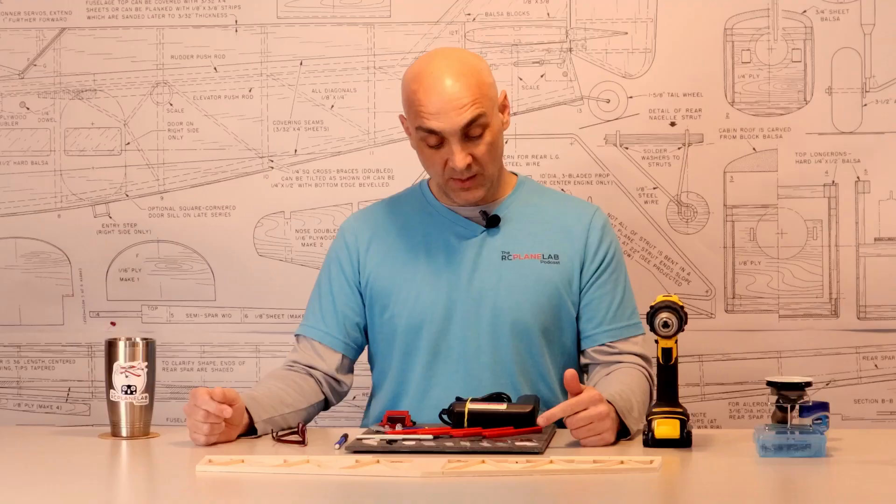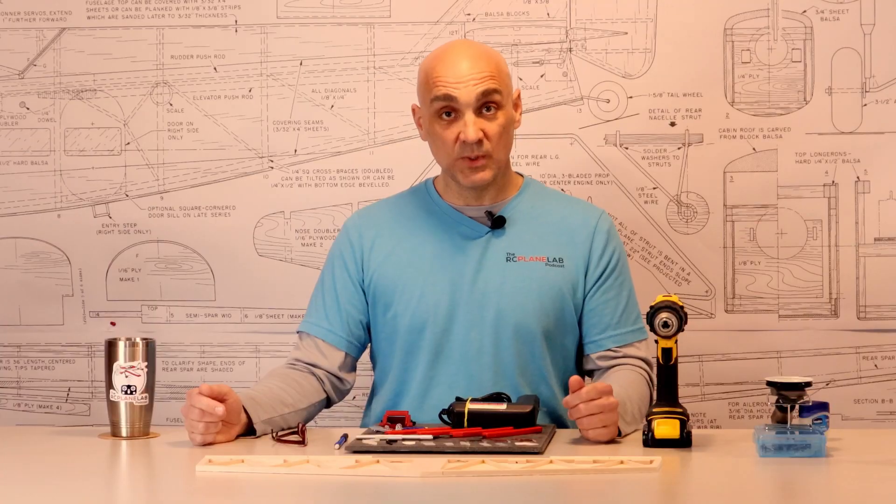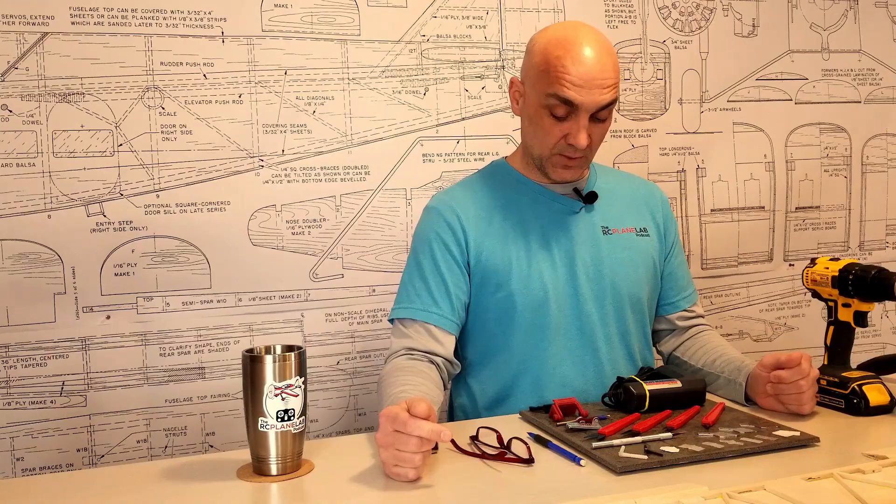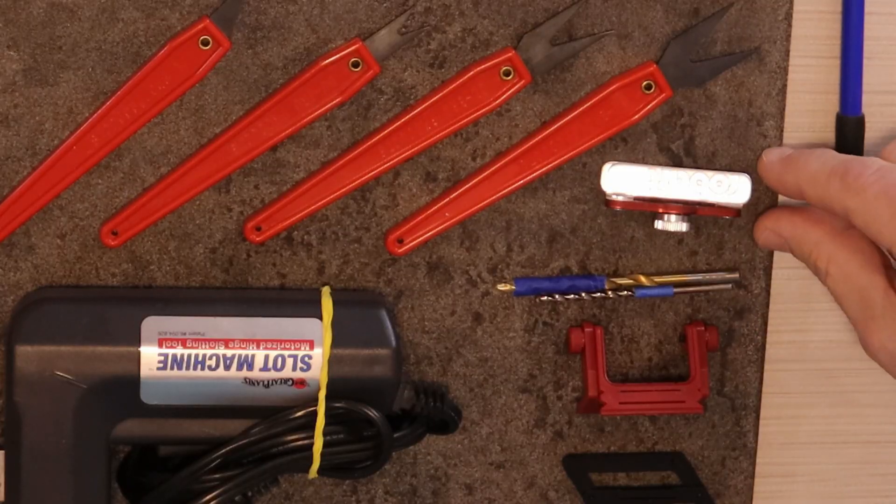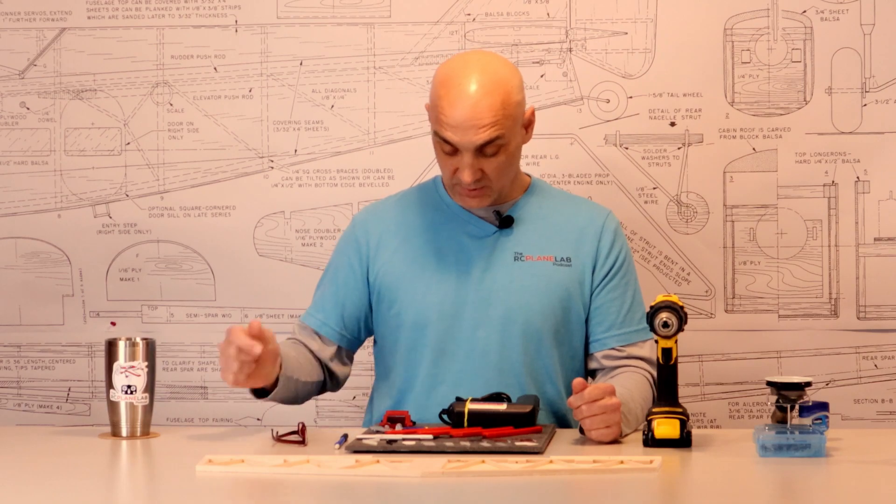And then we have another one of my favorite tools, the Aero broach. Comes in three sizes. Be sure to look out for that video because those are really fun to use. And then the tool that you use to install the Robart pinned hinges and some drill bits.